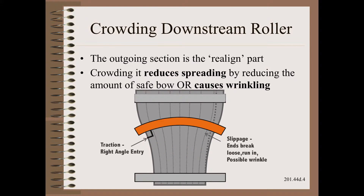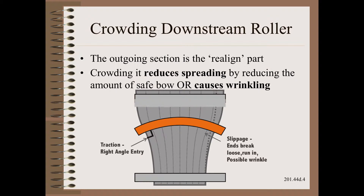As we learned in our Web 101 class, the web must adjust from an outward directed path as dictated by the normal entry law to a parallel entry to the downstream roller. If this is too crowded, two bad things might happen. First, you might have to decrease the bow magnitude and thus reduce the amount of spreading.